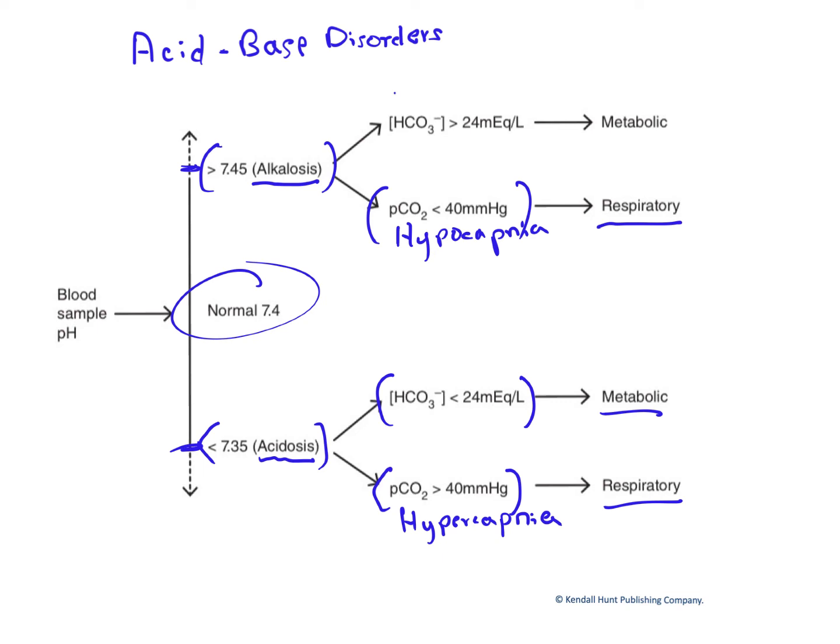The other kind of alkalosis is called metabolic. Here, we do not have hypocapnia. Instead, characteristically, there is a bicarbonate concentration greater than 24 milliequivalents per liter. This can be caused by less than normal metabolic acid production, a pathologic accumulation of bicarbonate, or some sort of renal dysfunction.